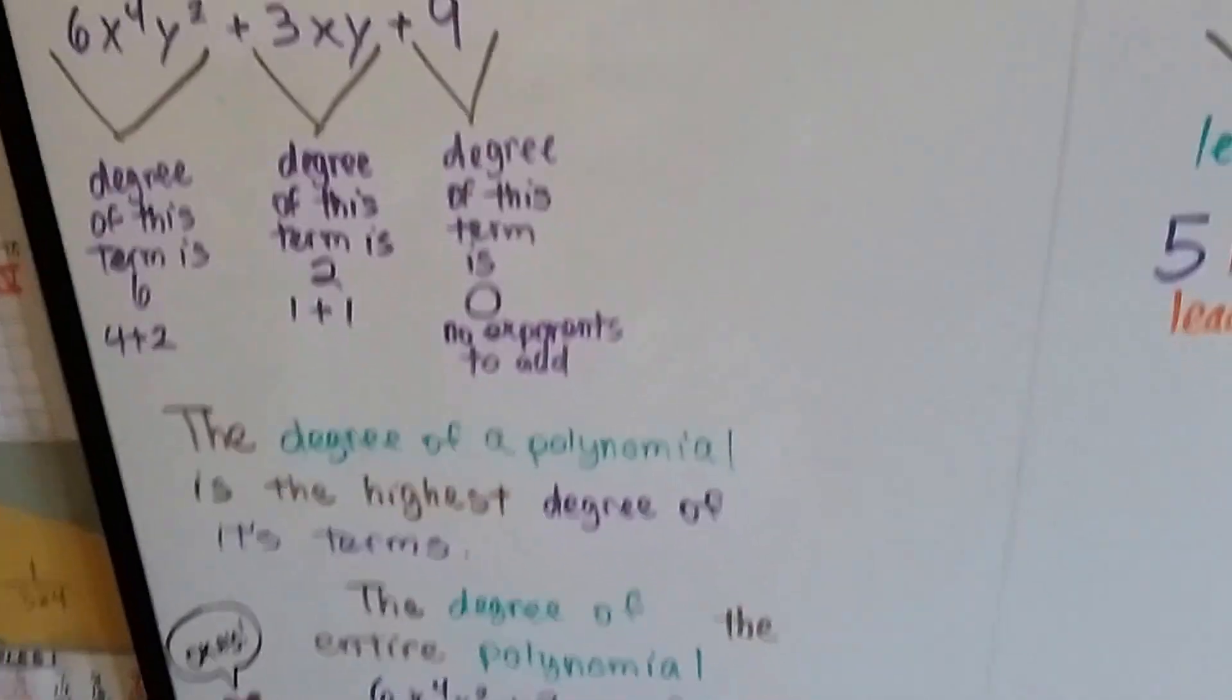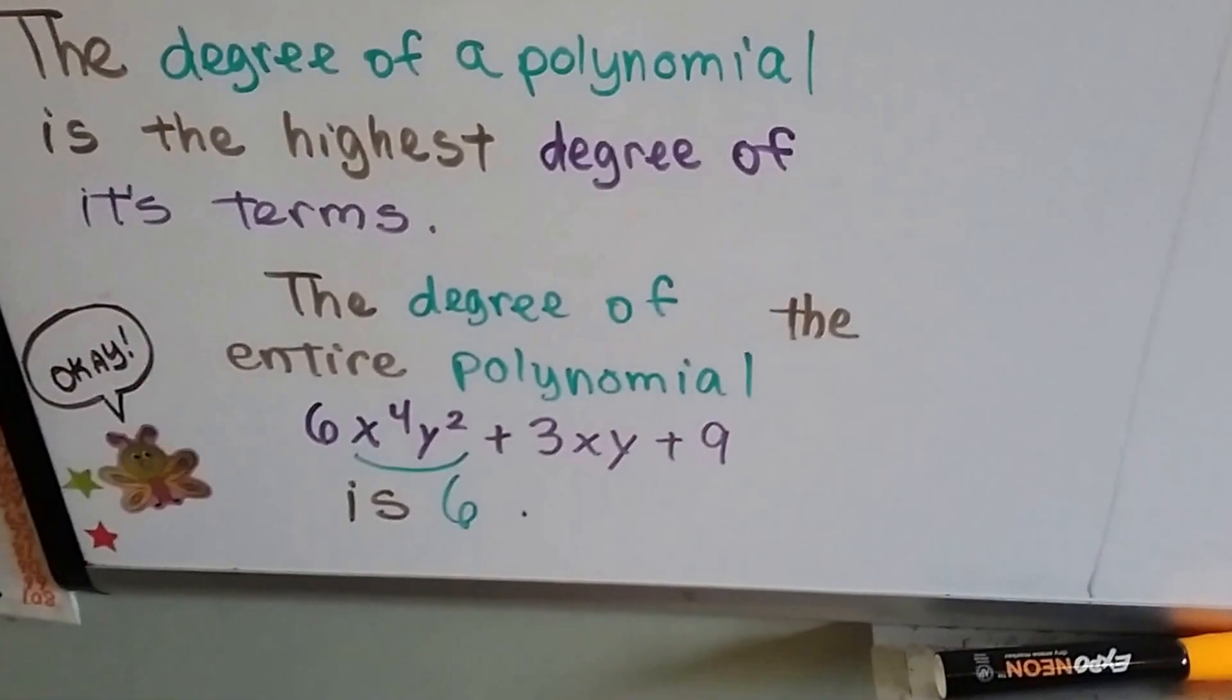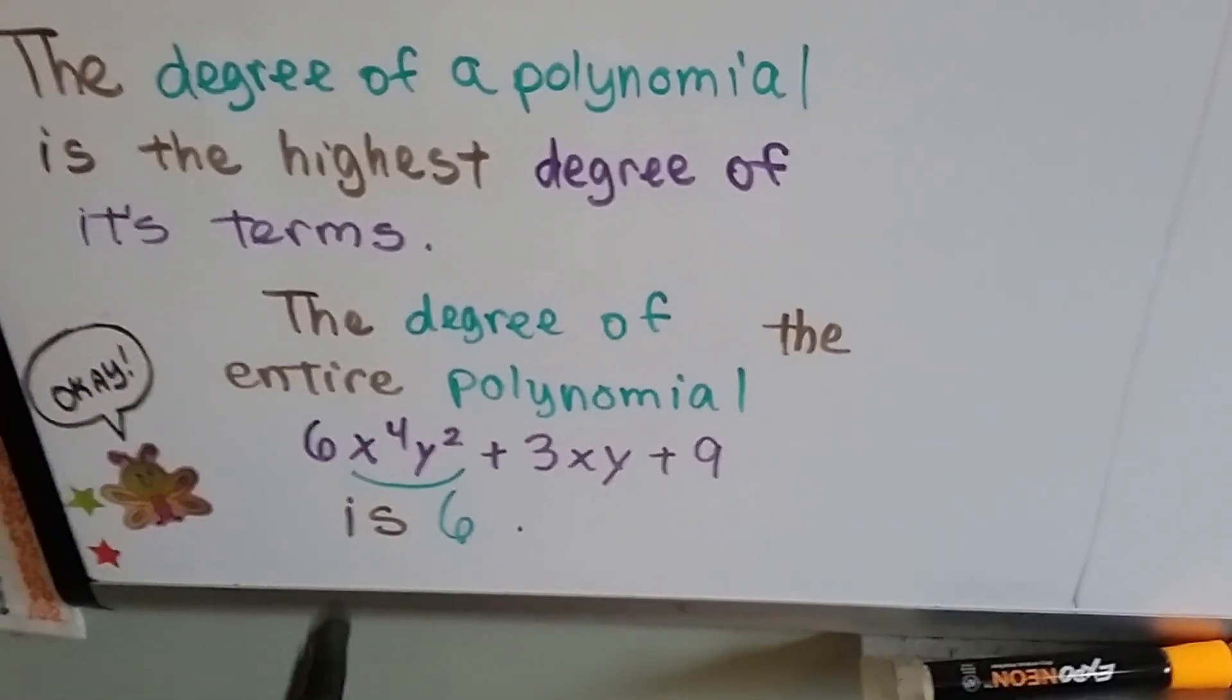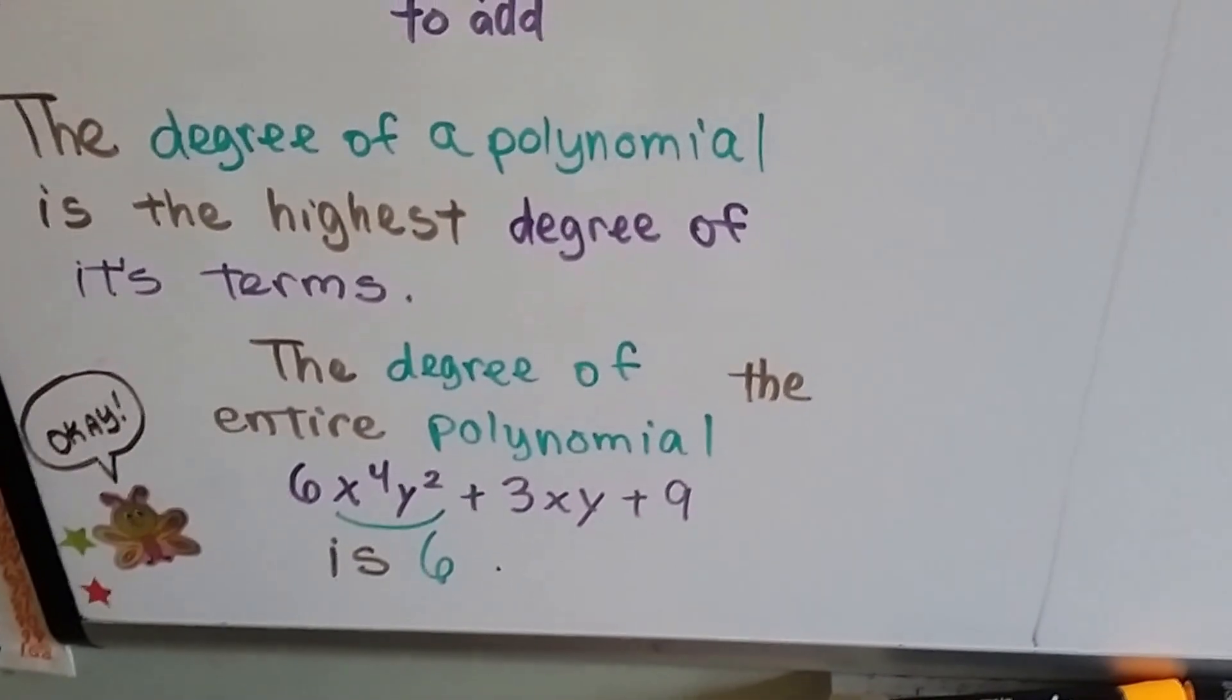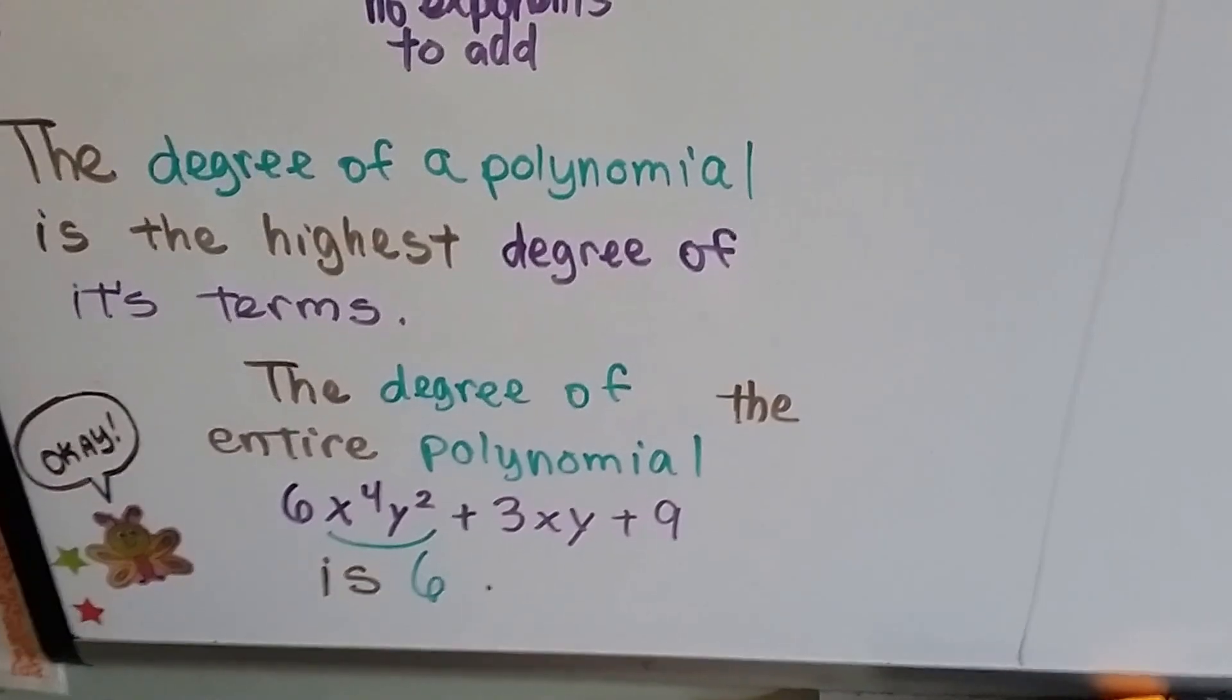So it would be this one as 6. So the degree of the entire polynomial, this whole thing, is 6, because this one term has a 6 as its degree.